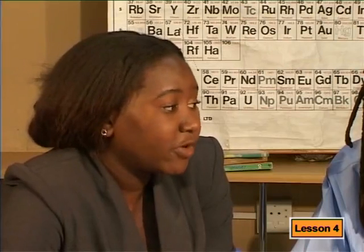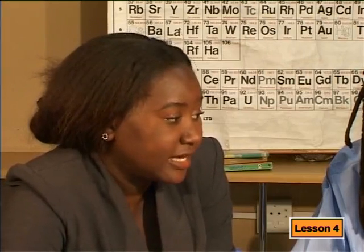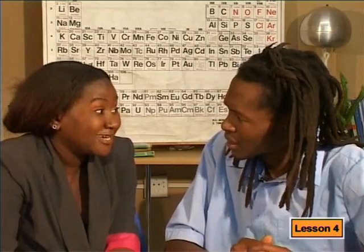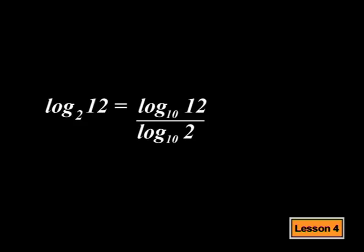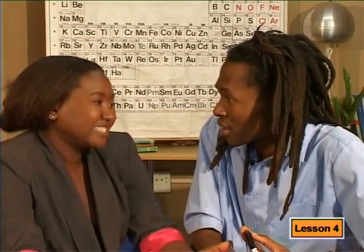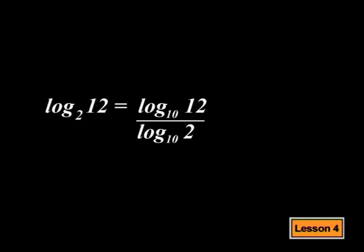I would like us to now look at a formula which sometimes makes working with logs easier. It's called changing the base. If we are given log base a of x, we can change this to log base b of x divided by log base b of a. Can you show me that using numbers? Good idea. If we had log base 2 of 12, for instance, we could change the base by writing it as log base 10 of 12 divided by log base 10 of 2. That's easy enough, but do we have to use base 10 or can we use any base?